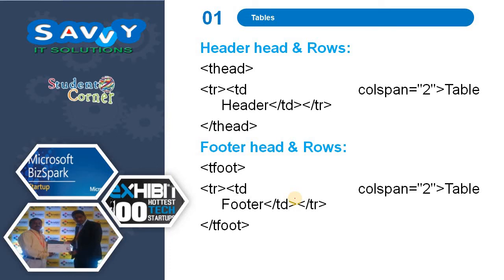THead is the header part. TFoot is the footer part. In between, there is one TR and TD per header, and at the same time TR and TD per footer.